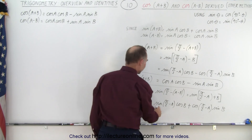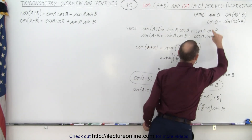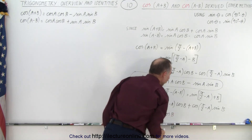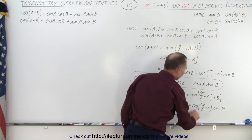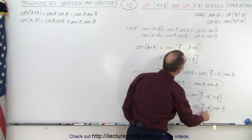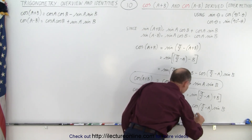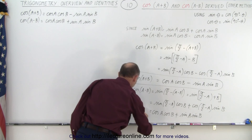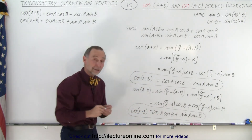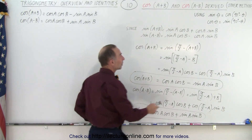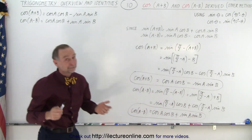Now we use the complementary relationships again. The sine of (pi over 2 minus a) gives us the cosine of a, times the cosine of b. And the cosine of (pi over 2 minus a) gives us the sine of a, times the sine of b. So the result is cosine of a times cosine of b plus sine of a times sine of b, and notice that this equals the cosine of a minus b — exactly what we were looking for. Once you know the sum and difference formulas for the sine function, you can very easily find them for the cosine function by relating them like this.